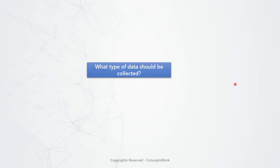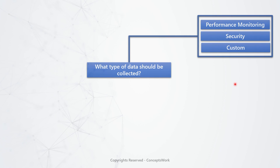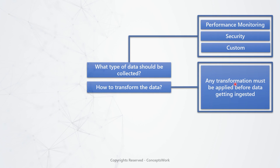When planning your data collection strategy, the first question to ask is: what type of logs do I need to capture? Is it performance logs, security logs, or a very specific custom requirement? Then, is there any real-time transformation to apply? For example, if a specific event type has four or five attributes and you find that two of those attributes are not required, is there a way to eliminate those two attributes before data gets ingested to the workspace? This kind of customization is available and can help you save cost beyond your expectations.